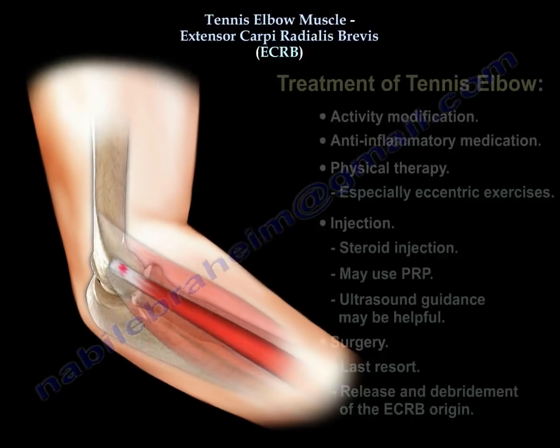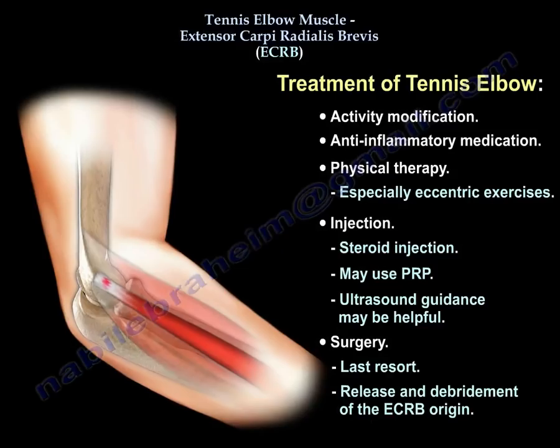Treatment of tennis elbow usually includes activity modification, anti-inflammatory medication, physiotherapy especially eccentric exercises, injection — steroid injection or PRP may be used — and ultrasound guidance may be helpful. Surgery is the last resort, and the surgery entails release and debridement of the extensor carboidialis previs origin.